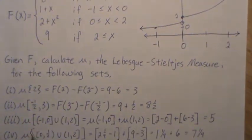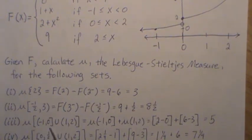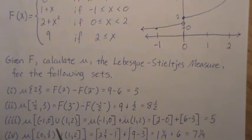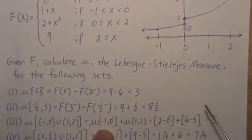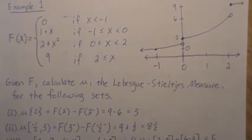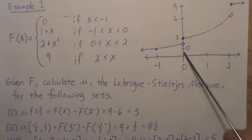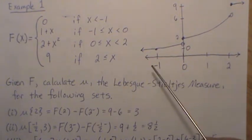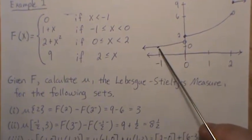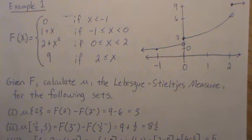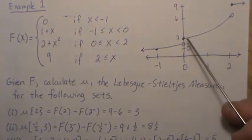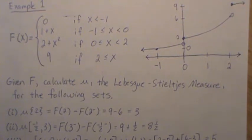Next, the measure of the union of two disjoint sets. Since they're disjoint, it's the sum of the individual measures. For [-1, 0], that goes from there to here and includes 0, giving F(0) = 2, and the left limit at -1 is 0. For the second set, the open interval up to 2 gives the left limit approaching 2, which is 6, and at 1 it's -3. Adding those gives 5.